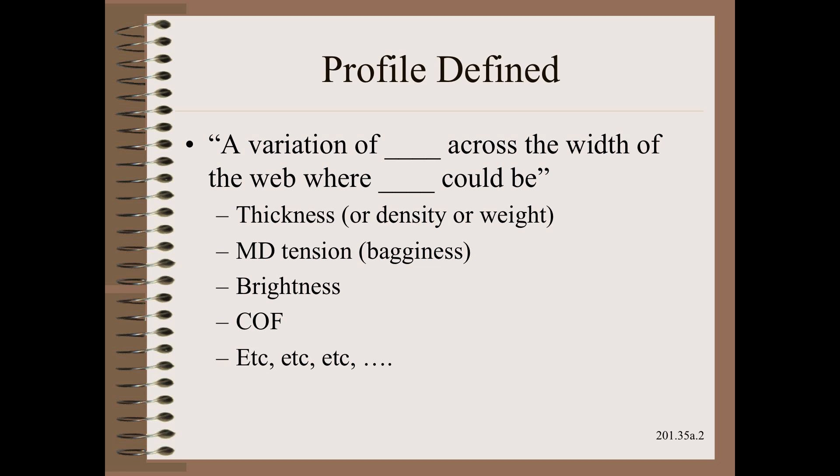It could also include the debilitating MD tension variation known as bagginess that is also sometimes called by other names such as camber, lay flat, pucker, and so on. However, this list could include anything you might consider important, including the histogram or frequency diagrams of defects versus position.